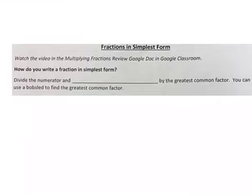We're going to review how to write a fraction in simplest form. The first thing you have to do is divide the numerator and the denominator by the greatest common factor. You can use the bobsled to find the greatest common factor if you don't know it. You can use your divisibility rules.